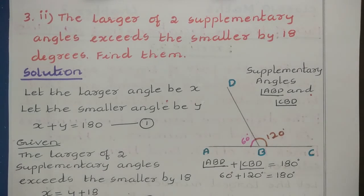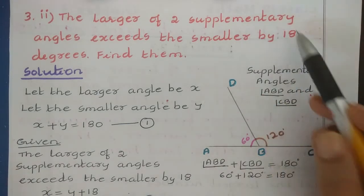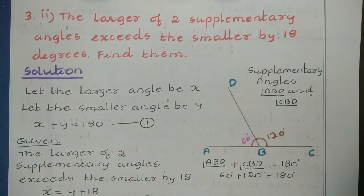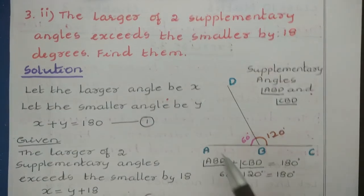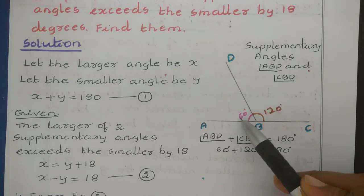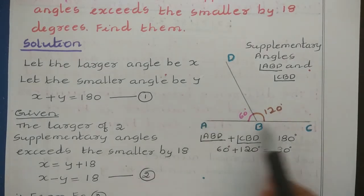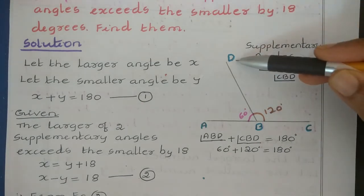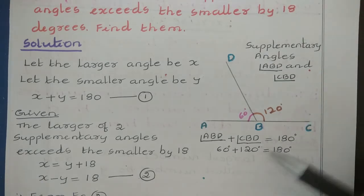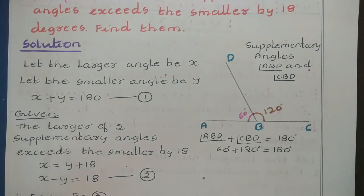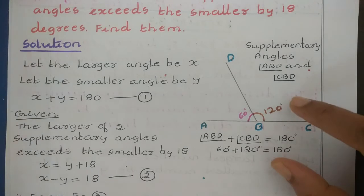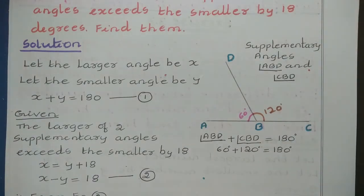Sub-question 2: the larger of two supplementary angles exceeds the smaller by 18 degrees. Find them. Here we need to find the angles. First, let us see what supplementary angles are. Supplementary angles means the sum of two angles equals 180 degrees. For example, if one angle is 60 degrees and the other is 120 degrees, angle DBC equals 120 degrees and angle ABD equals 60 degrees. Adding these gives 180 degrees, so these are supplementary angles.